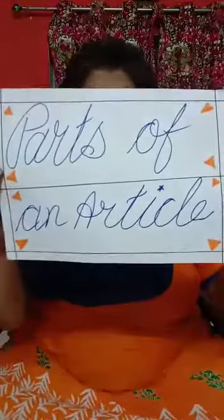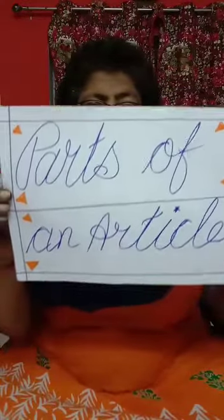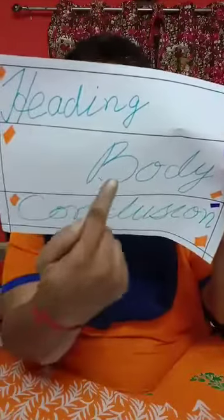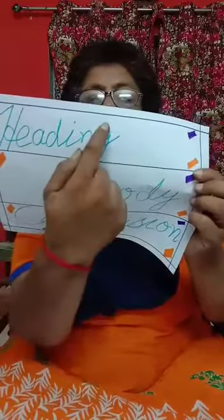The article is divided basically into 3 parts. Now I am going to tell you the parts of an article. There are basically 3 parts of an article. As you can see, the first part is heading, second part is the body, third part is the conclusion. In between heading and body comes the introduction part.